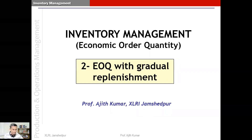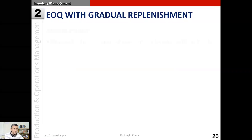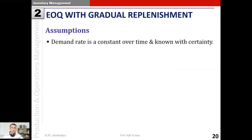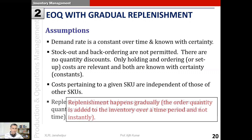EOQ with gradual replenishment. In this model, the assumptions made for the basic EOQ model are almost all the same - only the replenishment assumption is relaxed. In the basic EOQ model we assumed that replenishment happens instantaneously. Now we relax that assumption and say that replenishment is permitted to happen gradually, linearly over time - the inventory gets replenished with the ordered quantity over a time period, not at one instant.